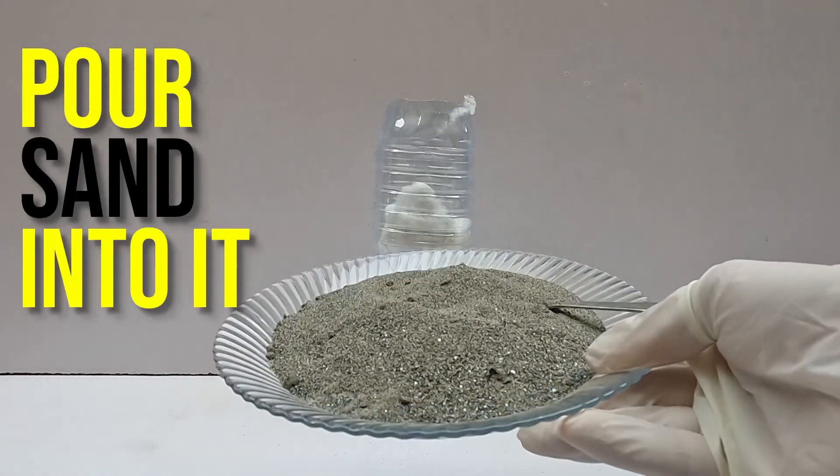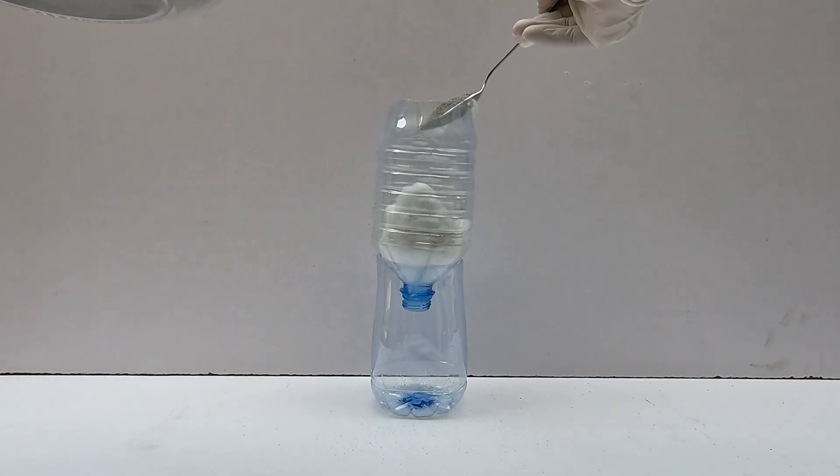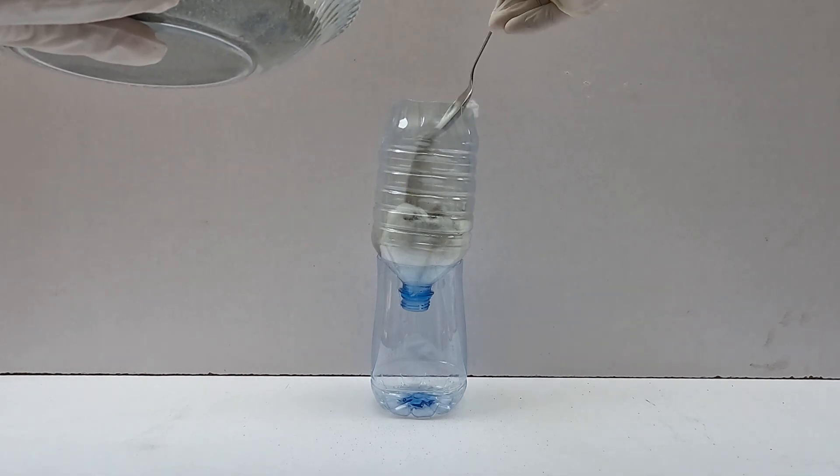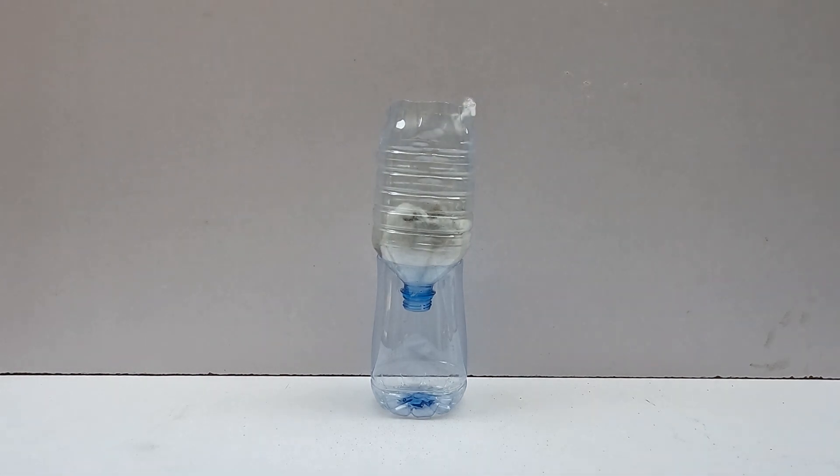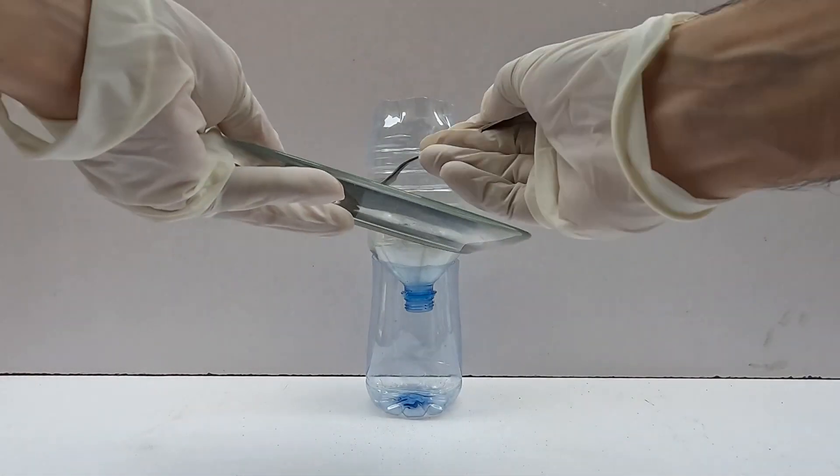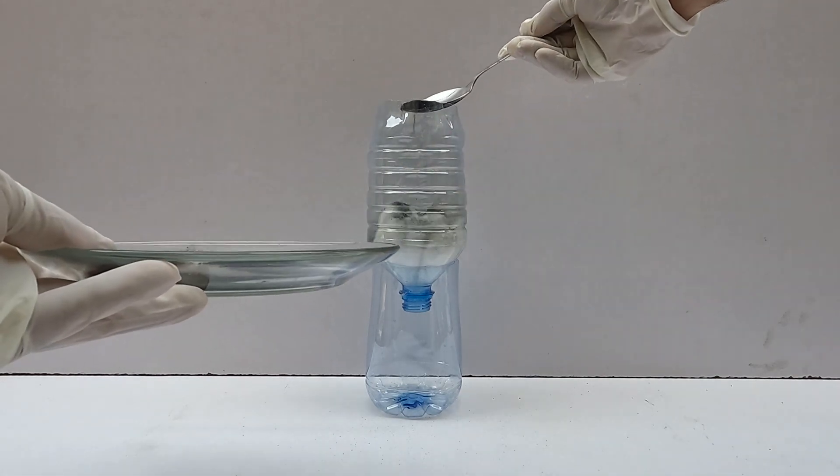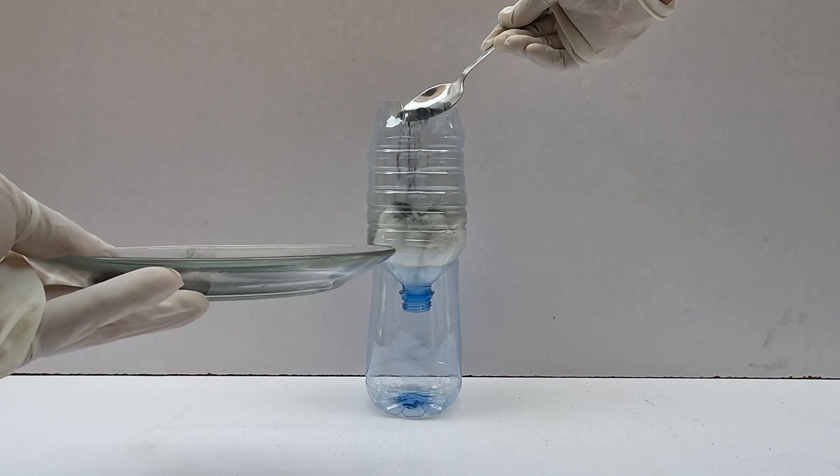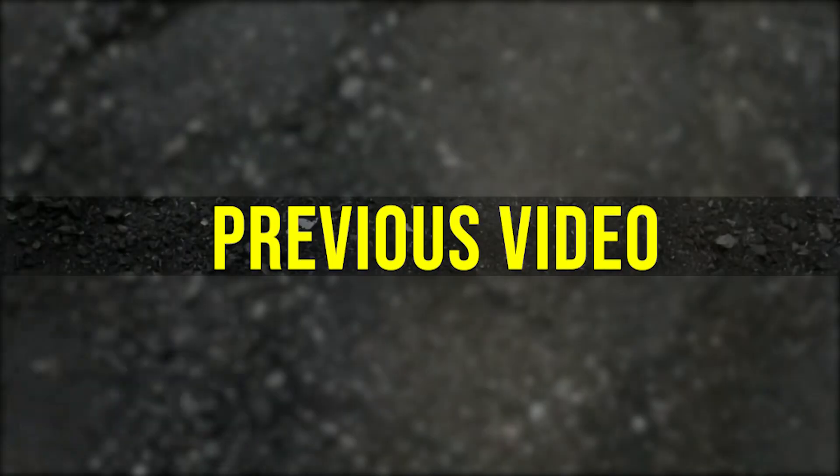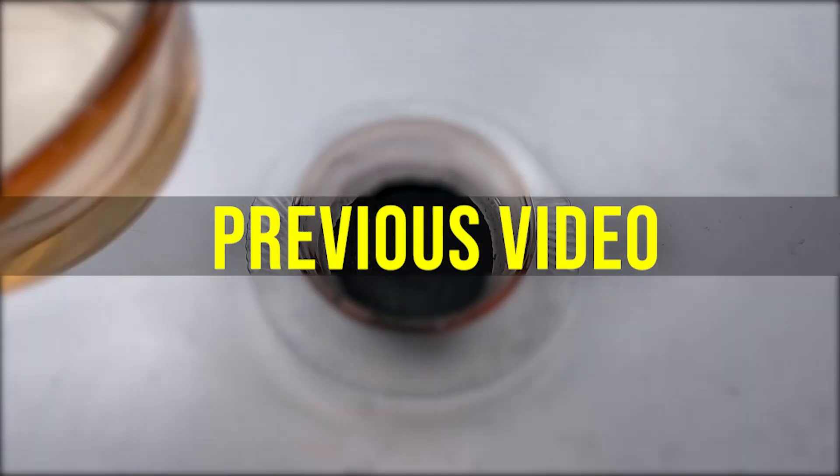Then pour the sand into it. After adding sand, pour fine activated charcoal. You can see the making of homemade activated charcoal in the previous video. I'll give you the link of the video in the description.